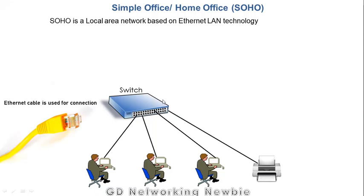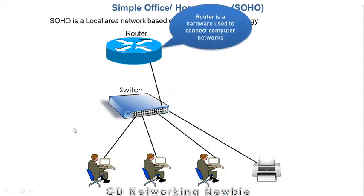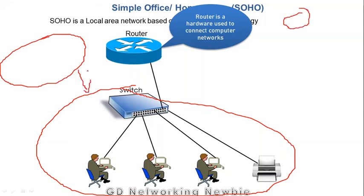This switch is connected by using a cable that is called an Ethernet cable. This is the shape or the picture of an Ethernet cable, and then this switch is connected with a router. What is a router? The simplest definition of a router is that it is a hardware that is used to connect multiple computer networks. For example, we have built a local area network here, and there may be other networks exactly like this somewhere. The router is used to connect these networks together — this is the job of a router.